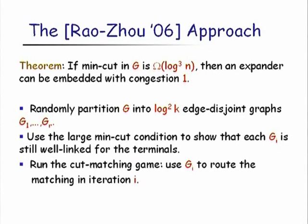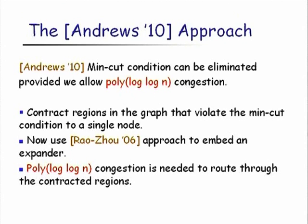After this result there was a lot of excitement suggesting that a polylog approximation for EDP with constant congestion might be achievable. The large min-cut condition seemed not too daunting — just log³ N. Matthew Andrews then extended this framework: given a graph that doesn't satisfy the min-cut condition, contract violating regions to single nodes, boost the connectivity of the contracted graph to satisfy log³ N min-cut, and invoke the Rao-Shu framework.